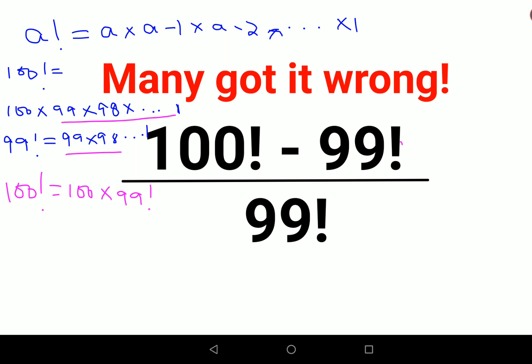Using this over here, I can write this entire thing as 100 into 99 factorial as your numerator, minus 99 factorial upon 99 factorial.